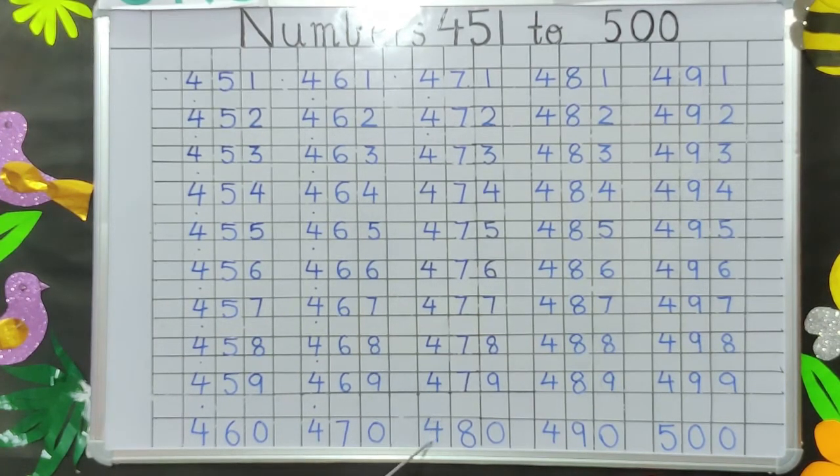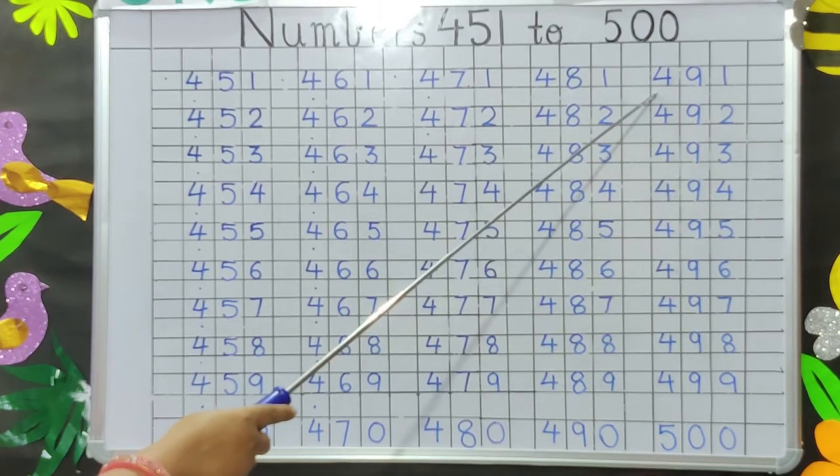What number is this children? Yes, 480. What number is this children? 486, 487, 488, 489, 490.